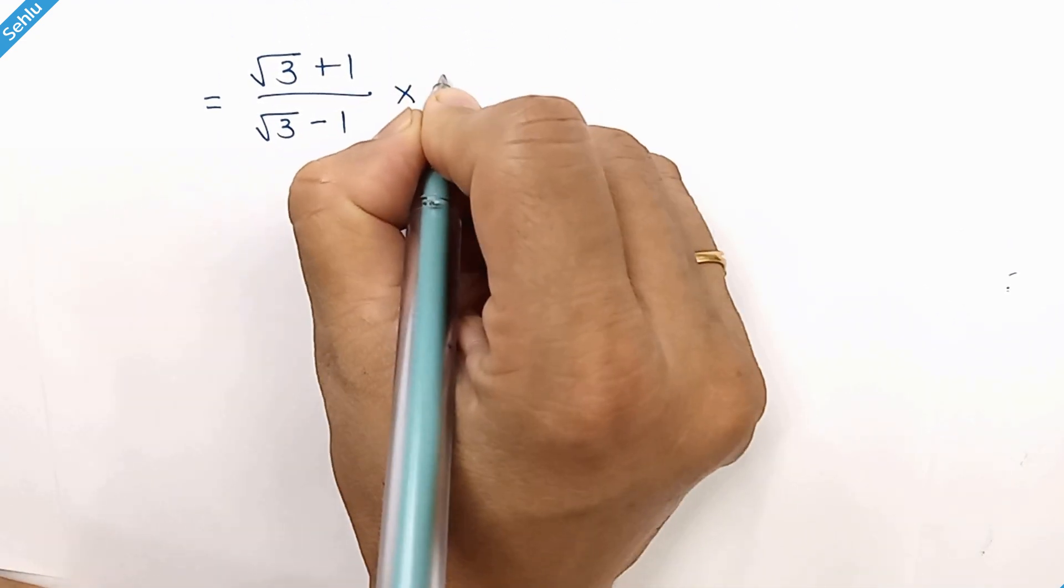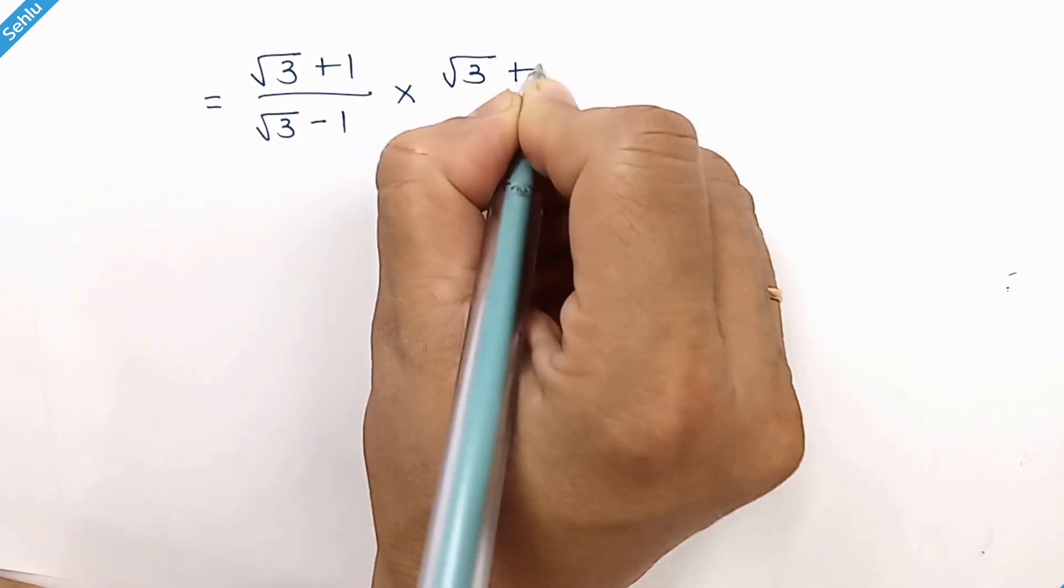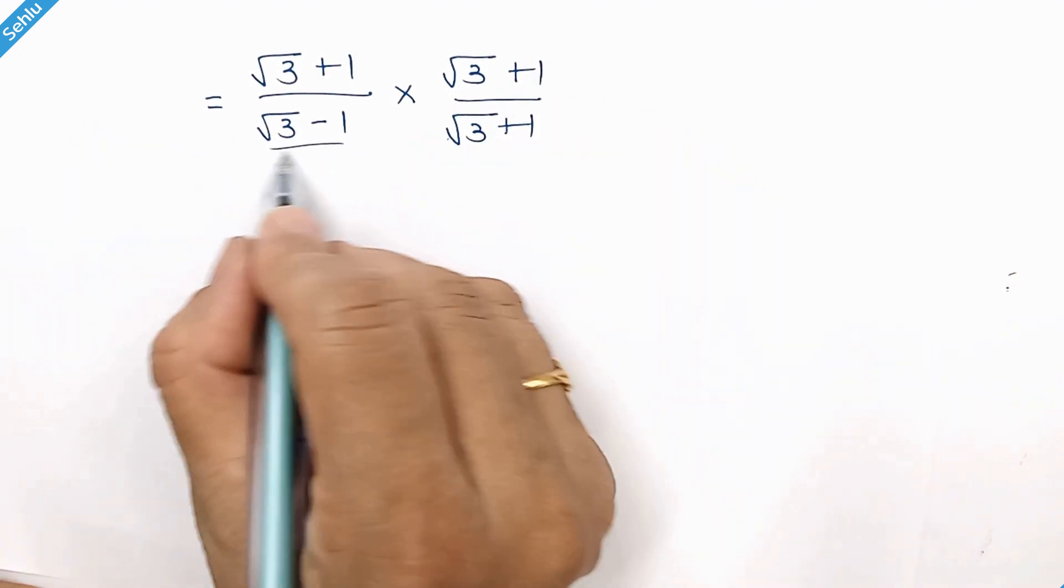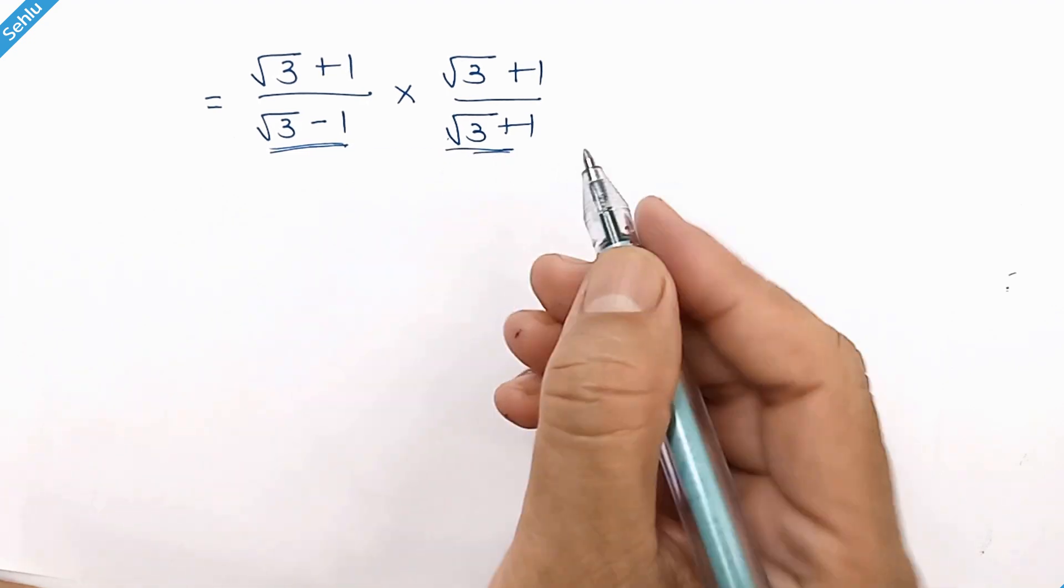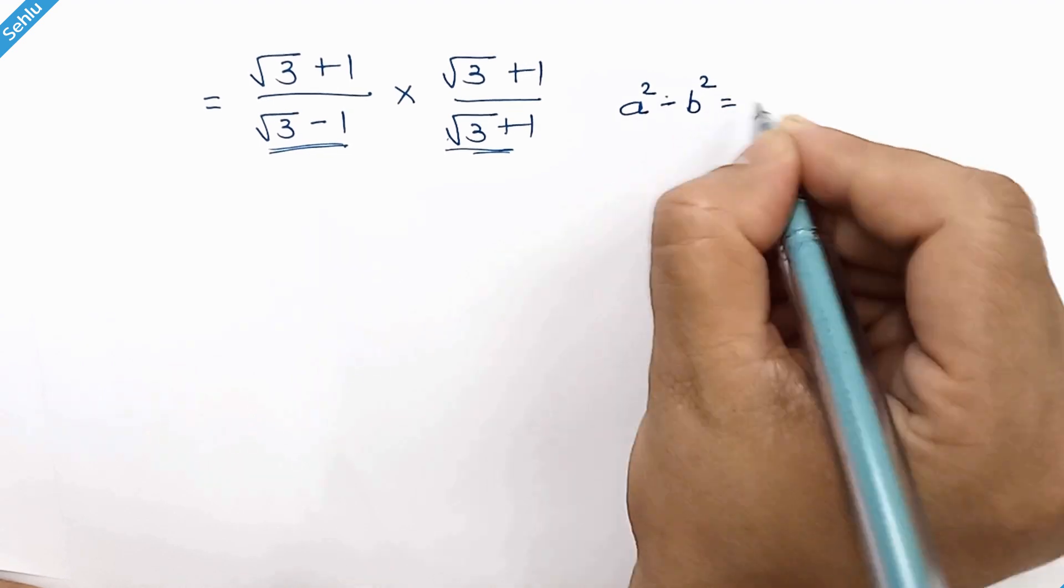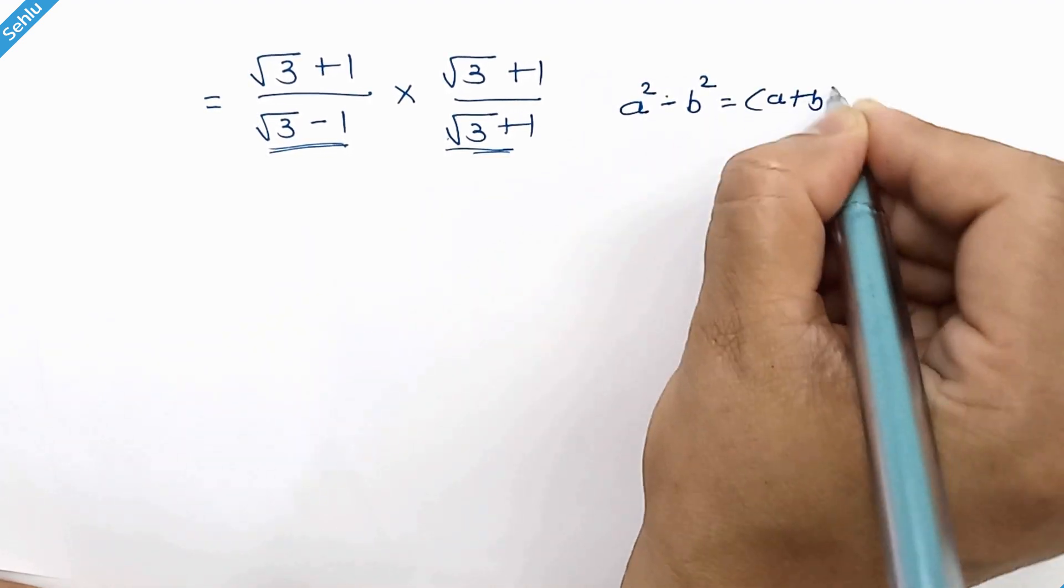We will multiply with square root 3 plus 1 over square root 3 plus 1. Now this can be a result of an identity which is a squared minus b squared, then it can be a plus b times a minus b.